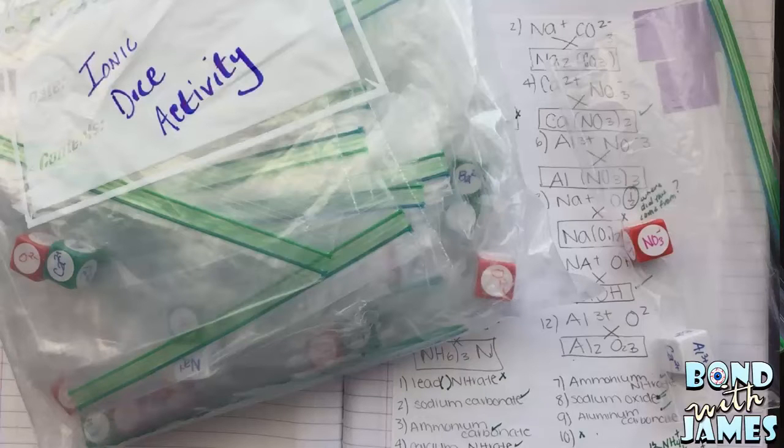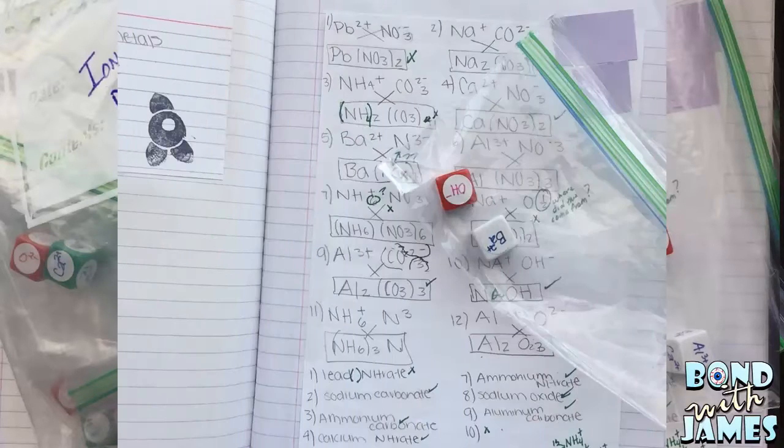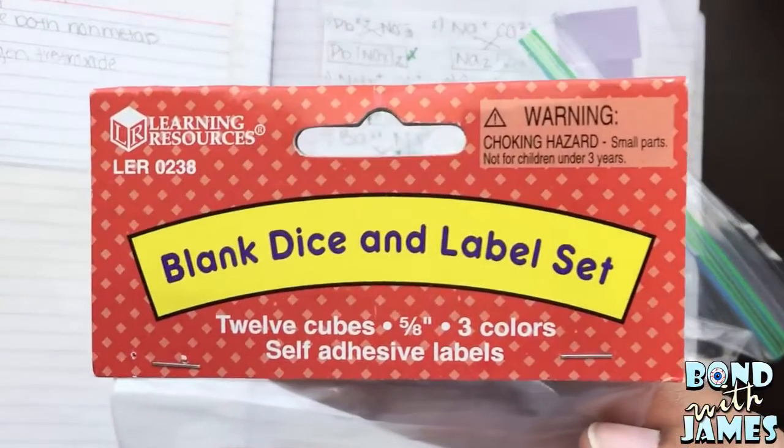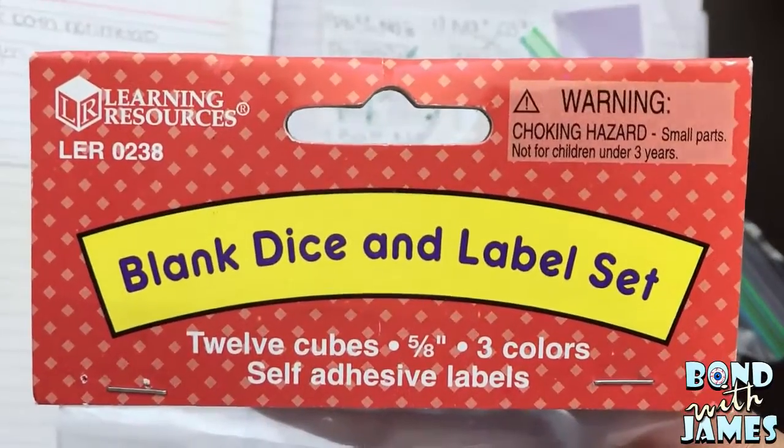Hi, this is James from Bond with James and in this video I'm going to talk about an ionic dice activity that I started doing back in 2008 when I came across this blank dice and label set from Learning Resources.